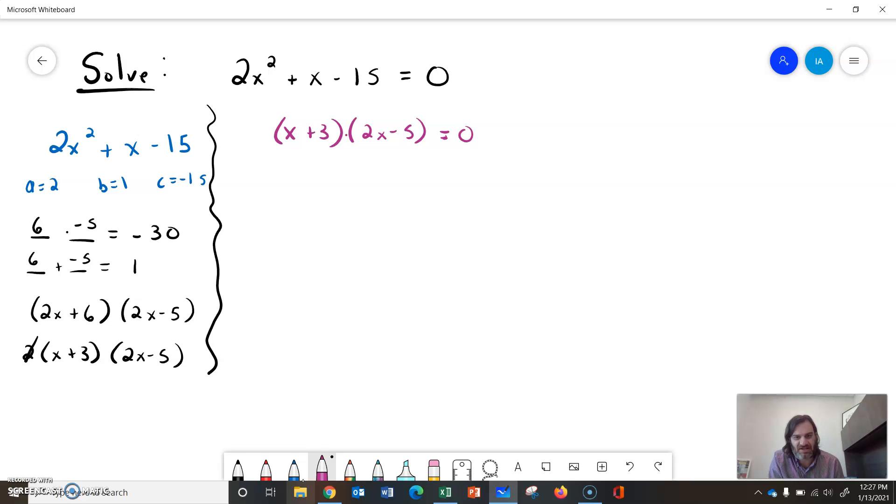But now we have two things multiplied together that give us 0, so we'll set them equal to 0 independently. So x plus 3 equals 0, along with 2x minus 5 equals 0, and we'll solve each one of these.